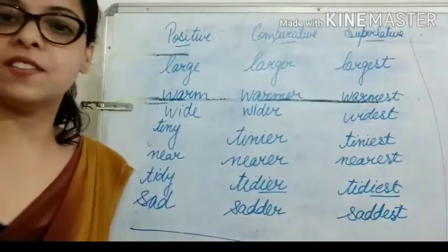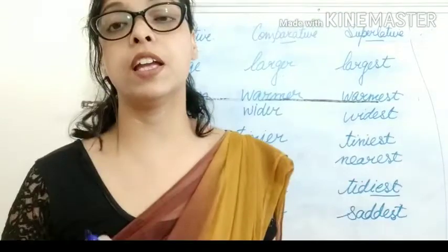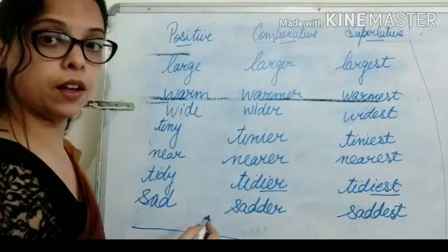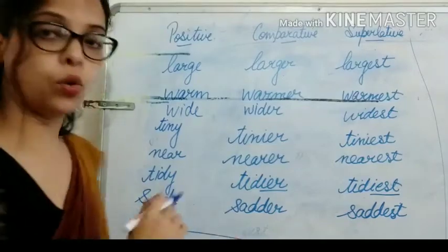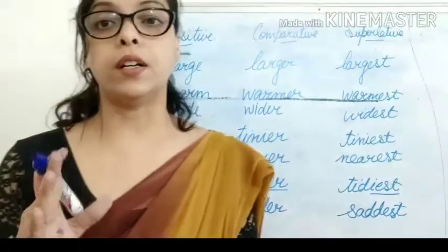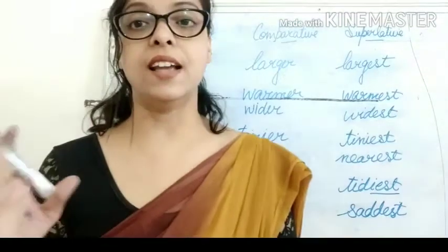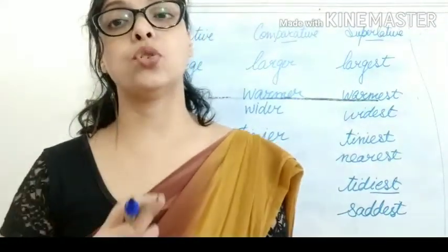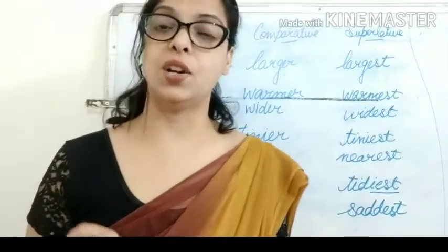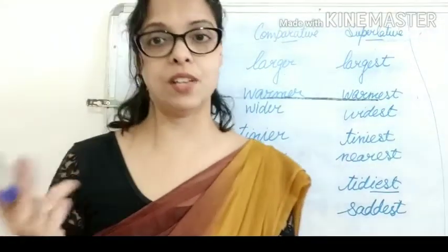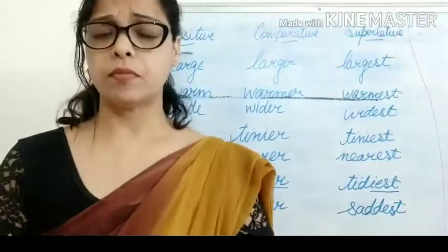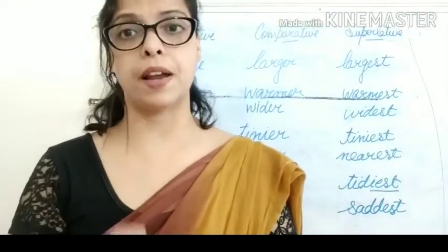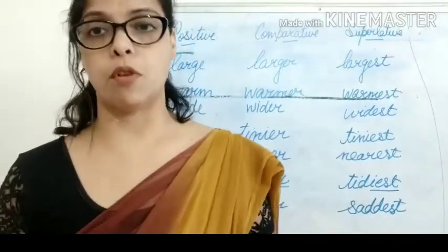Some adjectives double the last letter. For example, 'hot': hot, hotter, hottest. H-O-T-T-E-R — T is doubled. And hottest: H-O-T-T-E-S-T. Here too the last letter is doubled. So in some cases the last letter is doubled in comparative and superlative forms.